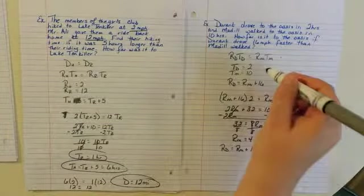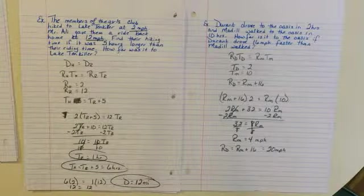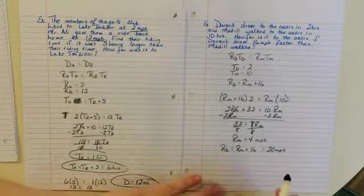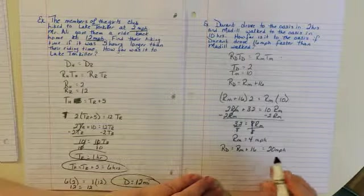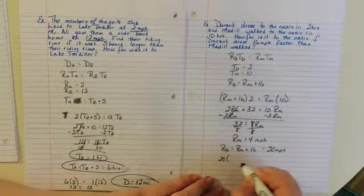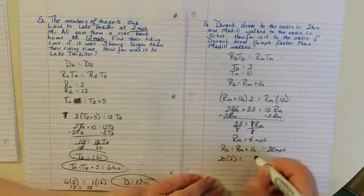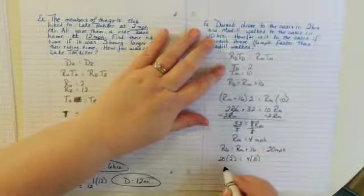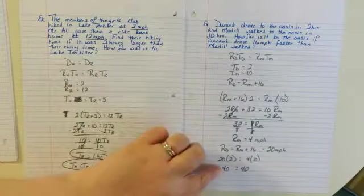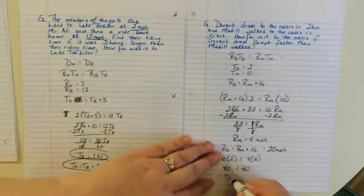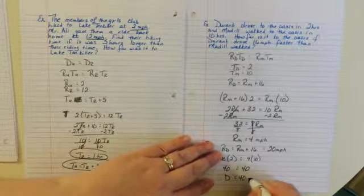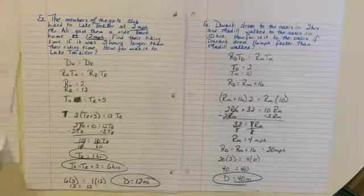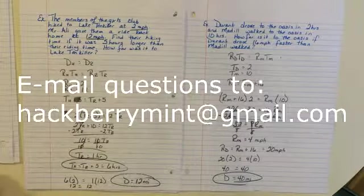Now that we know the rates and the times, we can find the distance. We also know they went the same distance, so their distances should be equal — that's a good check. The rate of Durant is 20 times the time of Durant which is 2, and that should equal the rate of Medill which is 4 times the time of Medill which is 10. So this is 40 equals 40, which checks our answer and tells us the distance to the Oasis is 40 miles. That is it for this lesson — try your practice problems and let me know if you have any questions. Thank you.